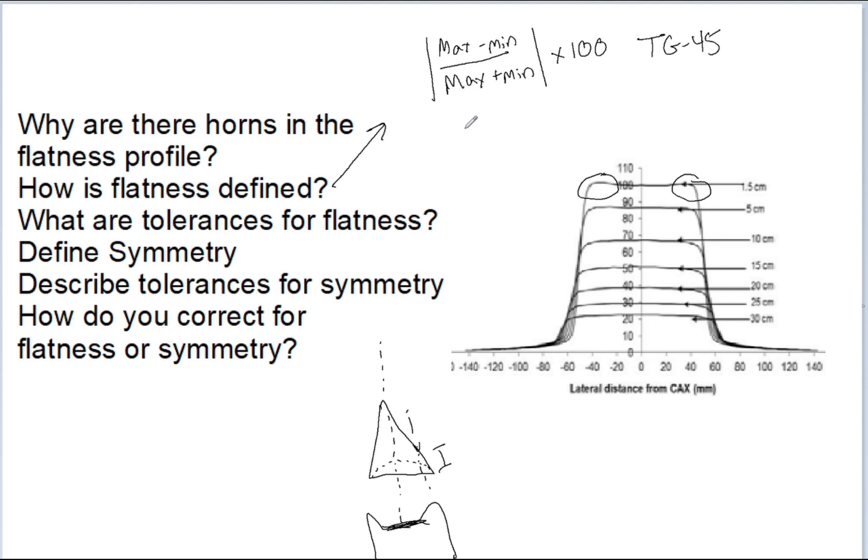What are the tolerances for flatness? TG-142 first says that you have to base your tolerances to match the treatment planning system. That is essentially your golden data and what you want your flatness and symmetry to be matched to.